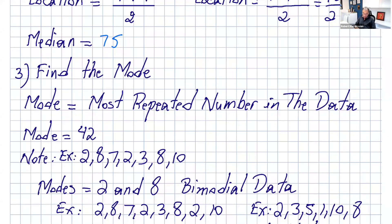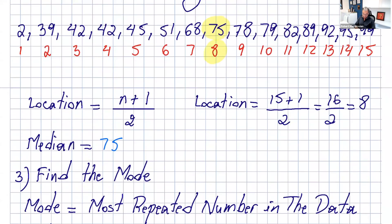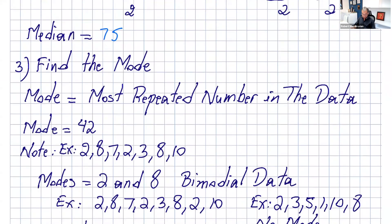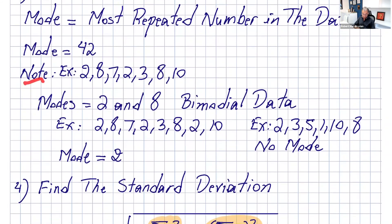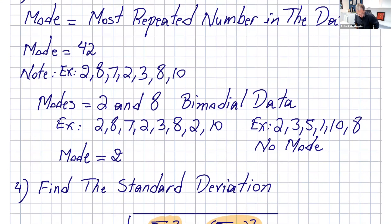Next is the mode. The mode is the most repeated number in the data. In this case it's 42. If I go back to the data, 42 is repeated a couple of times.